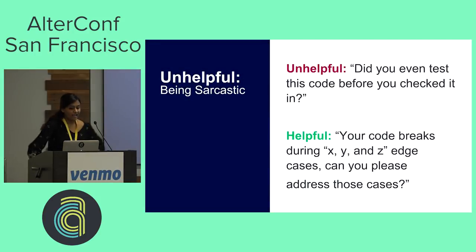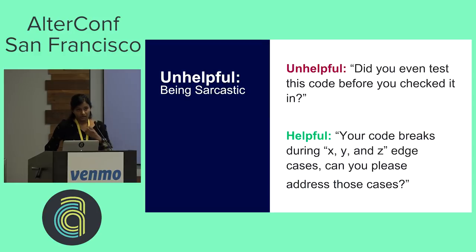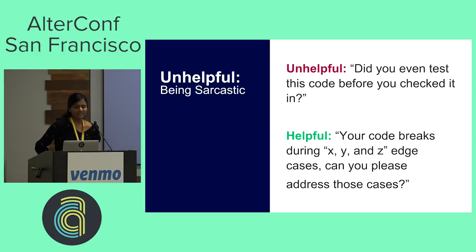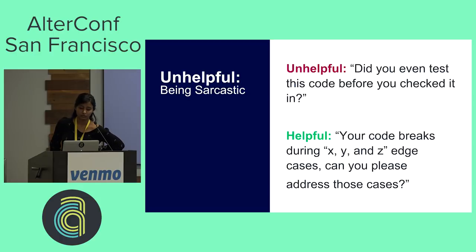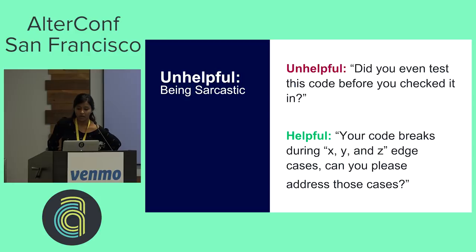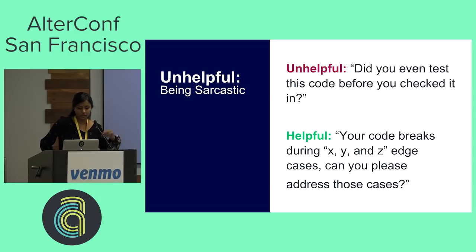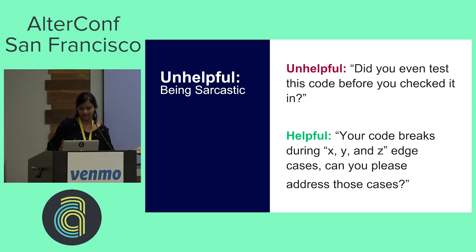I can't think of an appropriate time to be sarcastic when offering someone feedback. Saying something like 'did you even test this code before checking it in' is sarcastic, it's rude, and it gives no context or actionable feedback. It is better to describe the problem and not waste time. For example, you could say 'your code breaks during XYZ edge case — can you please address those cases.'